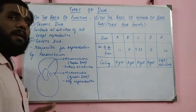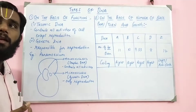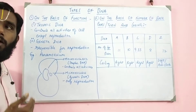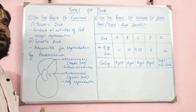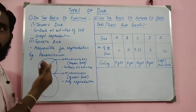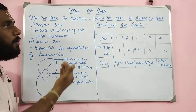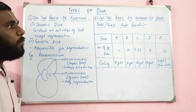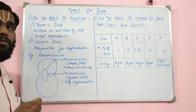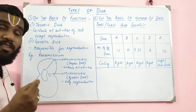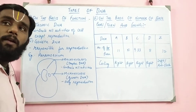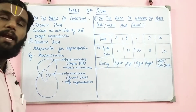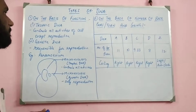We will be classifying the DNA on two main topics: number one, on the basis of function, and number two, on the basis of number of base pairs per turn and the coiling — how they coil, whether clockwise or anticlockwise.